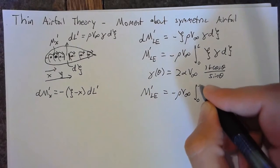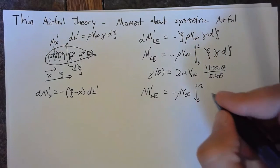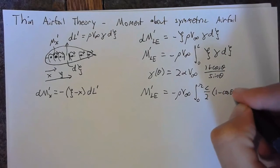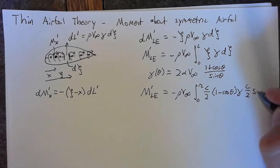Our moment about the leading edge is going to be -ρV∞ integral from 0 to π. This ξ term is going to be c/2(1 - cos θ), we'll have γ(θ), and then our dξ is going to be another c/2 times sin θ dθ.